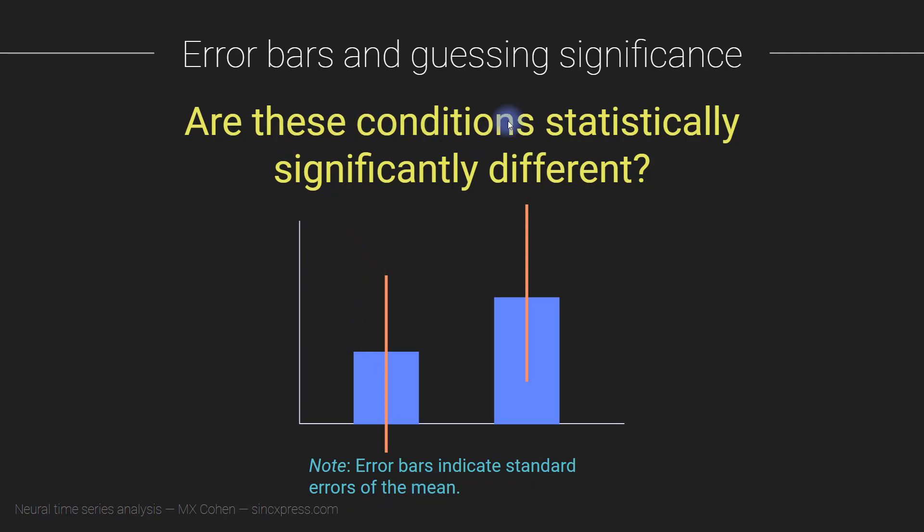And the question is, are these conditions - imagine this is condition A and this is condition B - are these two conditions statistically significantly different from each other based on looking at the plot? What do you think?